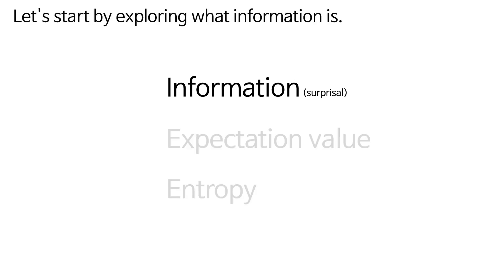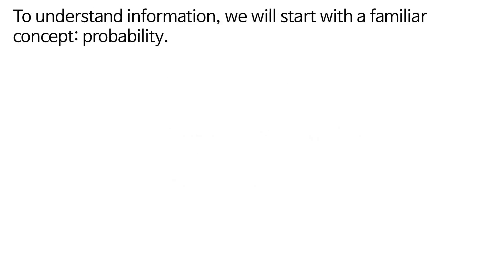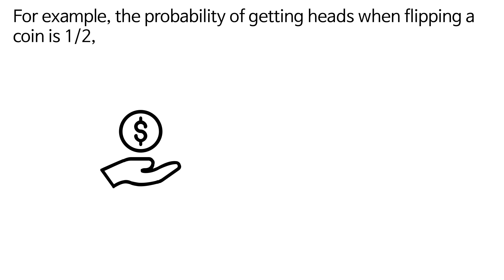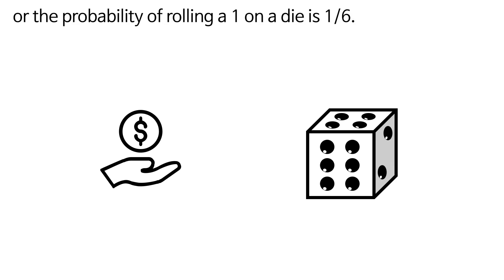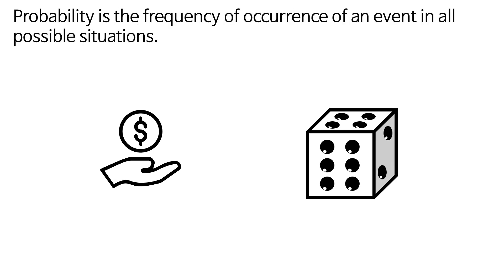Let's start by exploring what information is. To understand information, we will start with a familiar concept: Probability. You are probably familiar with probability. For example, the probability of getting heads when flipping a coin is one second, or the probability of rolling a one on a die is one sixth. Probability is the frequency of occurrence of an event in all possible situations.